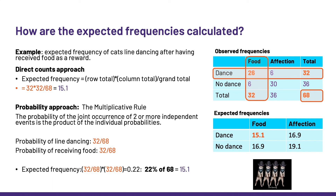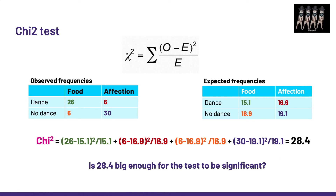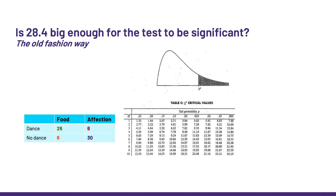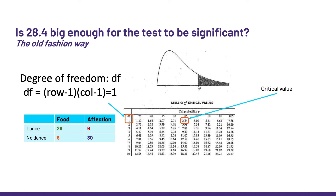We can see that the expected values are much more similar to one another than the observed ones, which makes sense since it is supposed to be pretty random. Now that we have the observed and expected frequencies, let's apply the chi-square formula. The chi-square formula gives us 28.4. Is 28.4 big enough for the test to be significant? We can compare our chi-square value to the critical one from the chi-square table, selecting 0.05 as the significance level and one degree of freedom for our two-by-two table. Our chi-square value is way above the critical value — that's significant!